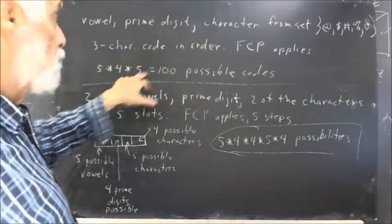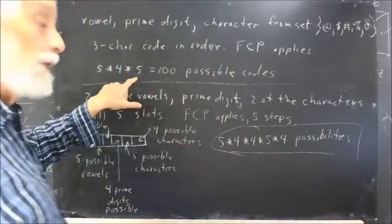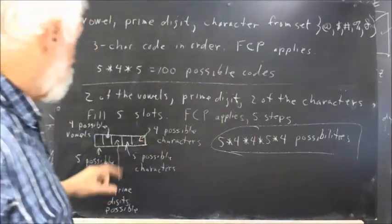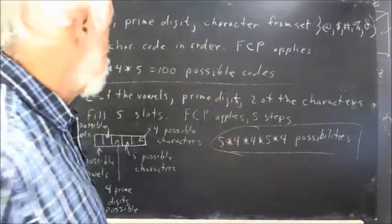The third step is to choose your character, and there are five characters from which to choose. So the fundamental counting principle tells us that there are 100 possible codes.